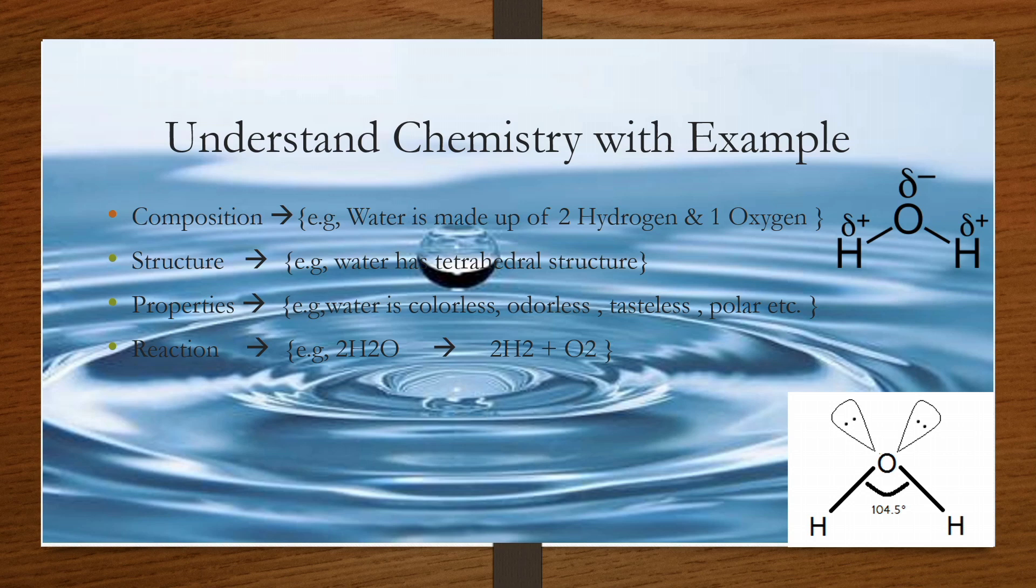The water structure shows polarity with partial negative charge on oxygen and partial positive charge on hydrogen. You can see tetrahedral structure. Tetra means 4, so the water structure is tetrahedral with 2 oxygen bonds and 2 hydrogen bonds.